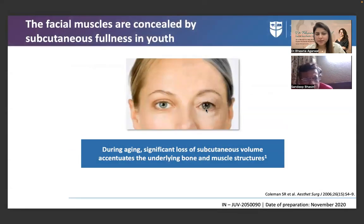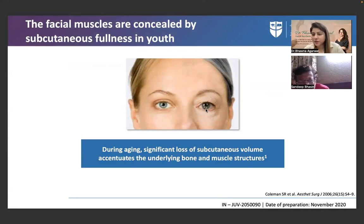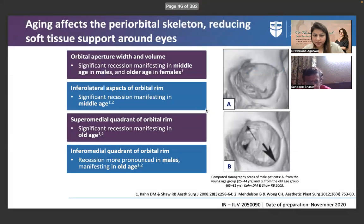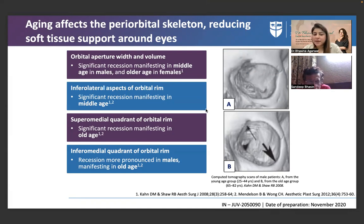Facial muscles are concealed by subcutaneous fullness in youth. During aging, significant loss of subcutaneous volume accentuates underlying bone and muscle structures. Skin changes further add to all the aesthetic concerns arising from underlying morphological and anatomical changes. Regarding the periorbital skeleton: orbital aperture width and volume show significant recession manifesting in middle age — in men earlier, in women at a later age.